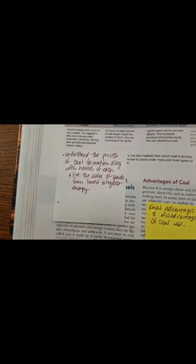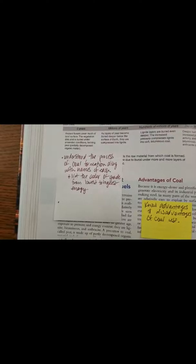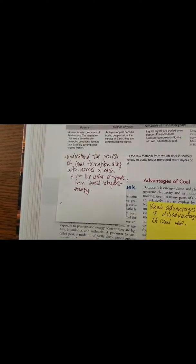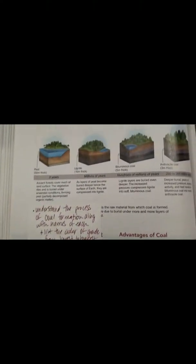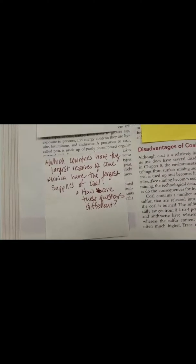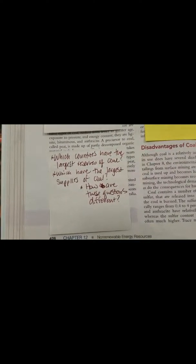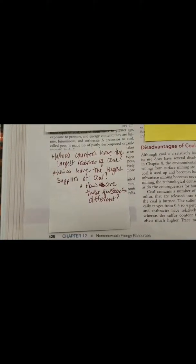Make sure you understand what they're named and the order of formation. And then moving down, understand the process of coal formation along with the names. This is also the list of their grade order. Peat would be the lowest grade versus anthracite would be the highest grade. Then know which countries have the largest reserves of coal and which have the largest supplies of coal, and make sure you know the difference between those two questions.